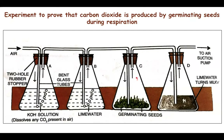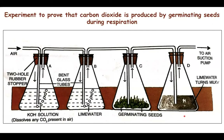The next bent tube begins from the space above the germinating seeds, and the fourth bent tube dips inside the liquid in flask D. The last bent tube leads from above that liquid into the suction pump. Flask A contains potassium hydroxide solution, which absorbs carbon dioxide. Flask B contains lime water, an indicator for carbon dioxide. Flask C contains germinating seeds, and flask D also contains lime water. When external air passes through flask A, potassium hydroxide absorbs any carbon dioxide, so carbon dioxide-free air passes into flask B.